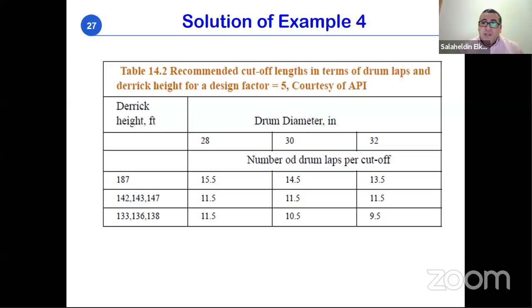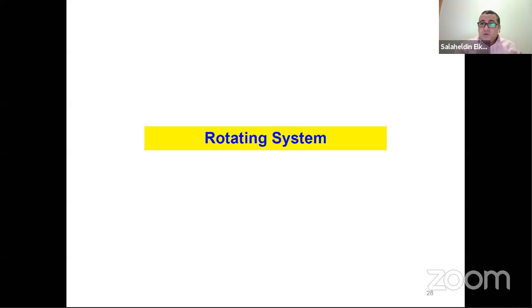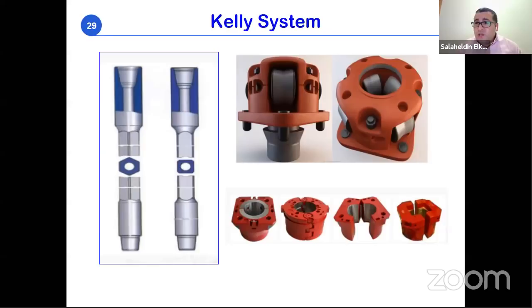The second system is the rotating system, whose main objective is to provide rotation to the bit. To drill or cut rock, two things are needed: rotation and weight on bit. Just like using a hand drill at home — you rotate and push simultaneously — this same mechanism applies to drilling. The weight comes from heavy drill collars, and rotation comes from either the rotary table or the top drive.